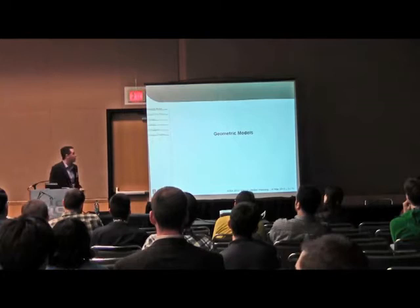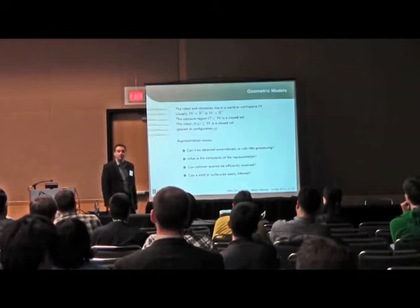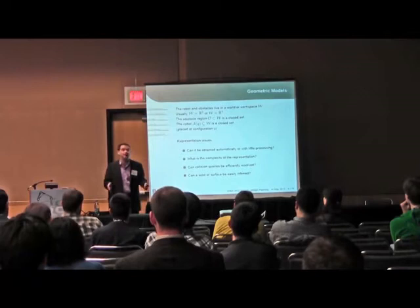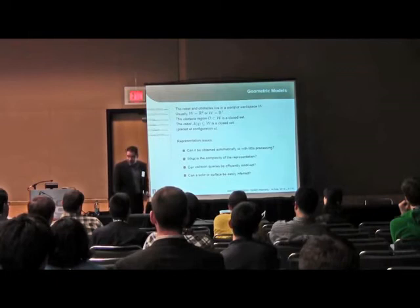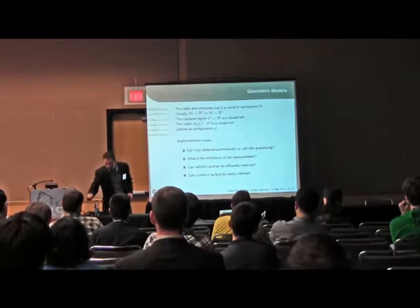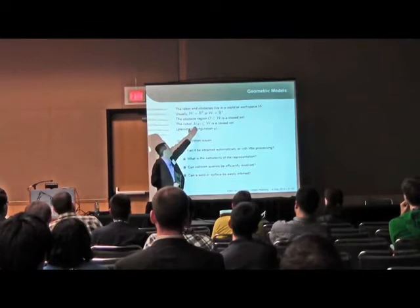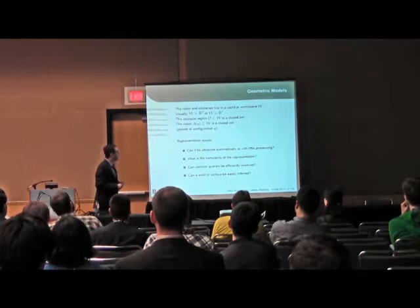The first part is geometric models. One of the first things we have to do is describe the environment. We have a robot and obstacles that live in a world or workspace, which may be R2 or R3. We don't go beyond that because we don't have a four-dimensional robot. We will get into some higher dimensional spaces, but the workspace for the robot is always 2D or 3D. Inside of that, we have an obstacle region — some closed subset of the world — and we have a robot placed at some configuration q. We have to represent this robot and these obstacles.